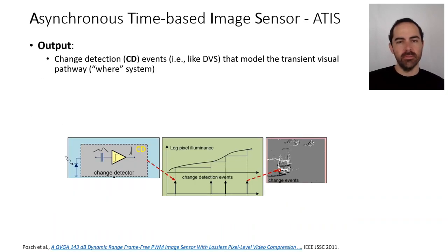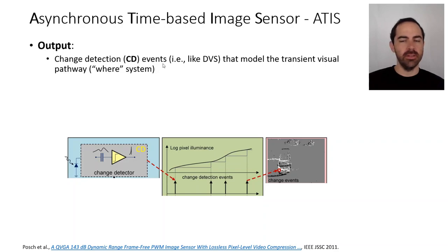The second type of event camera is called the ATIS — Asynchronous Time-based Image Sensor. This sensor outputs events called change detection or CD events, and these are like the DVS, which model the transient visual pathway. Light comes to the photodiode, it's converted and amplified, and produces these events.